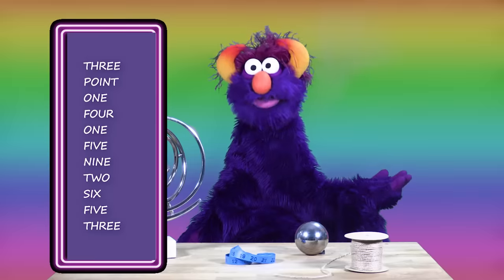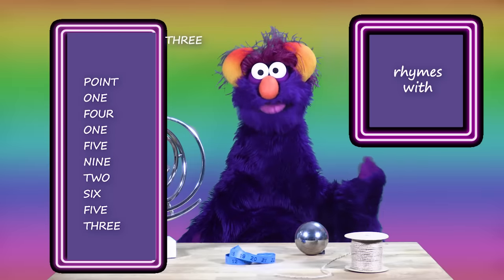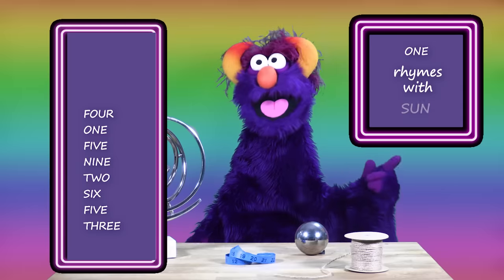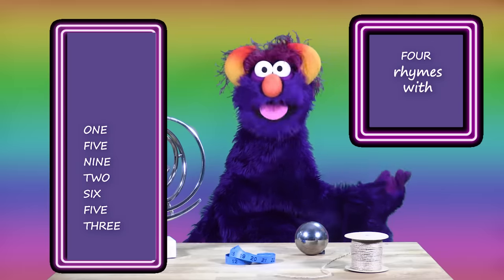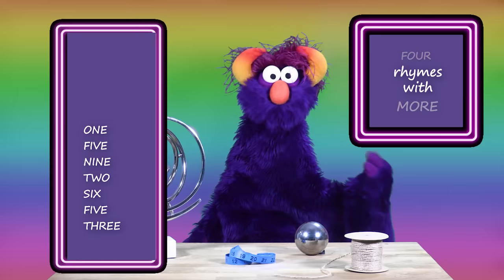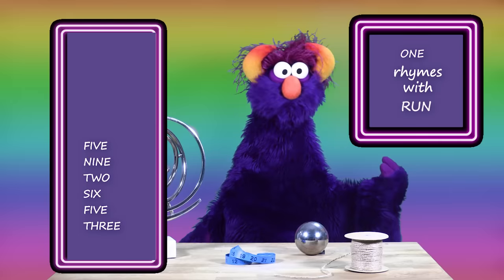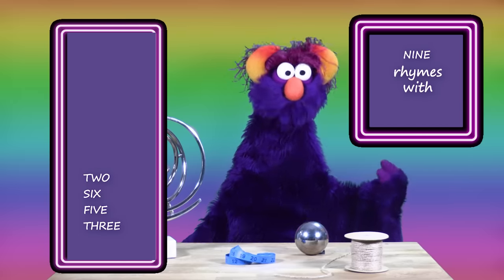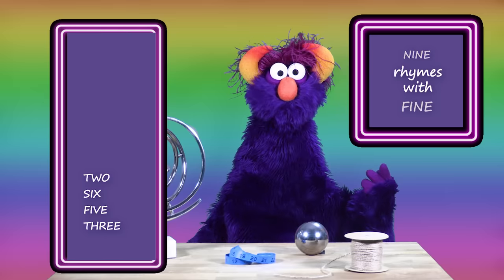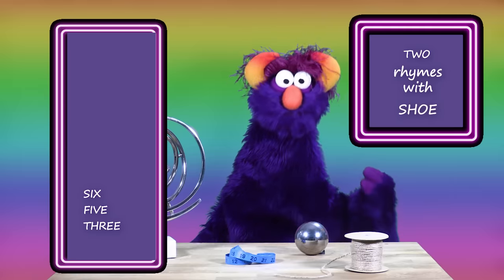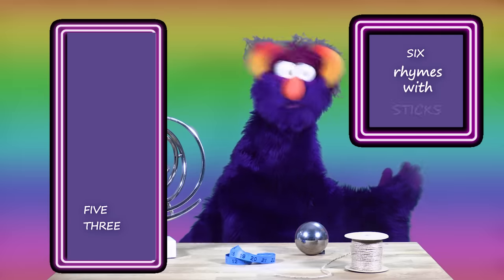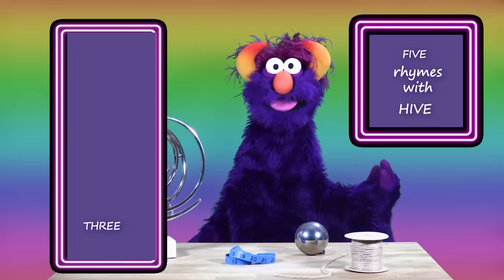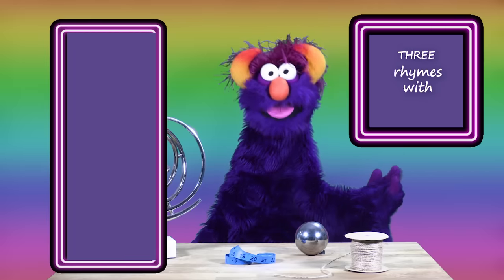Now we pick words that rhyme with the numbers. Three rhymes with tree. One rhymes with sun. Four rhymes with more. One rhymes with run. Five rhymes with alive. Nine rhymes with fine. Two rhymes with shoe. Six rhymes with sticks. Five rhymes with hive. And three rhymes with bee.